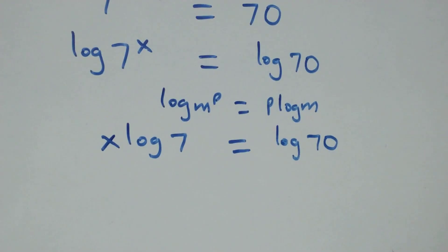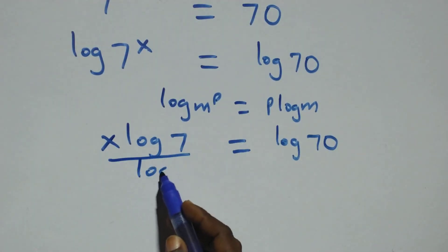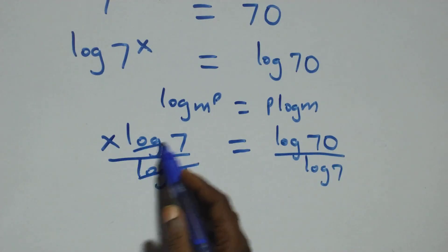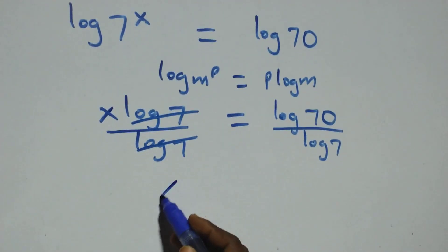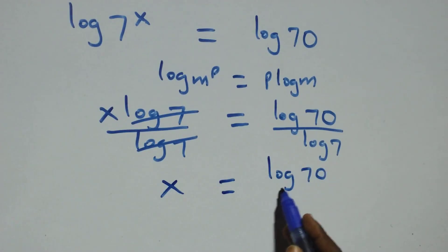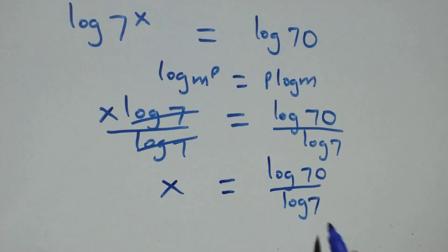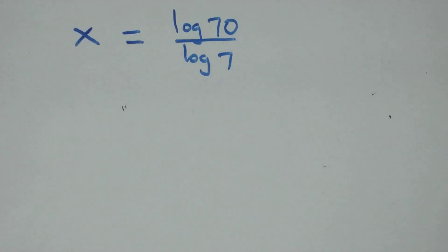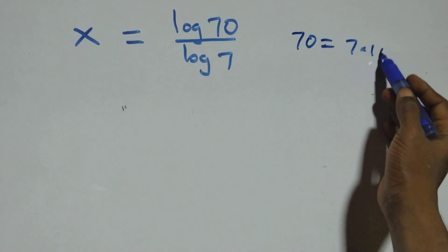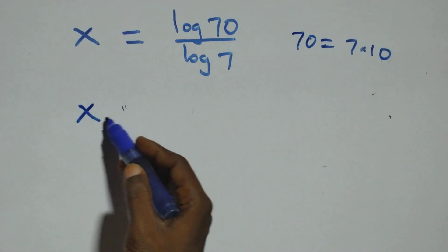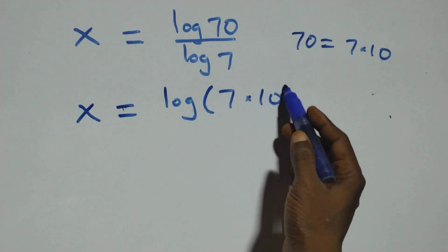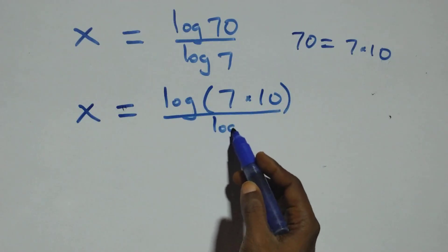We divide both sides by log 7 — divide this side by log 7 and also divide that side by log 7. Then we have x equals log 70 over log 7.